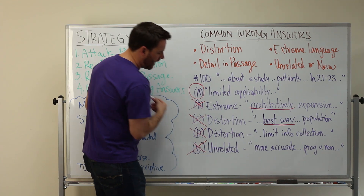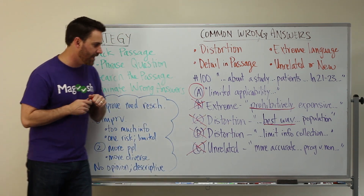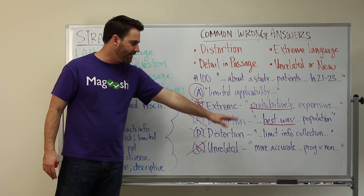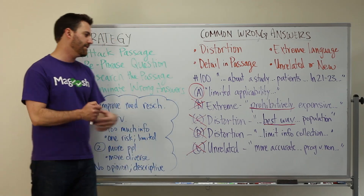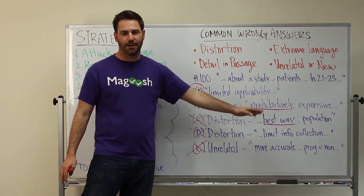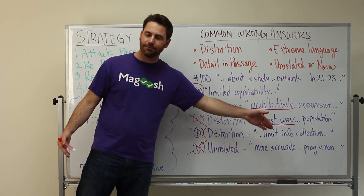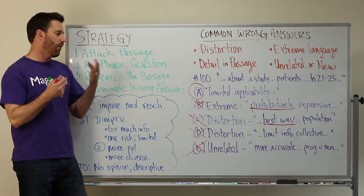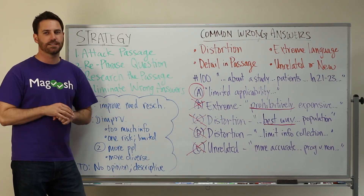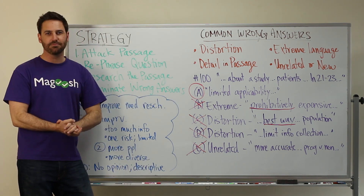Finally, E is wrong as well — it is unrelated. It says that we get more accurate information on progressive versus non-progressive diseases. We don't have any information about this. They do mention progressive and non-progressive at the end of the passage, but we have no idea if this approach would be more or less accurate. That's unrelated — it's new information we can't support with what's in the passage.